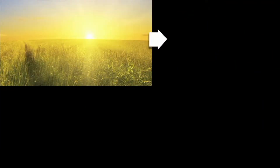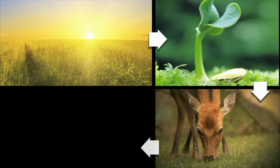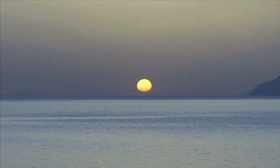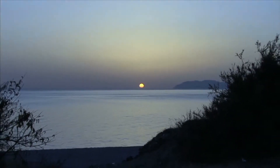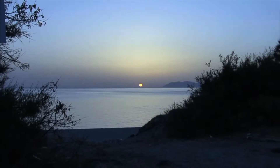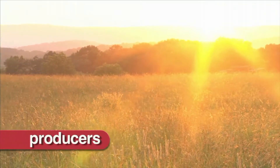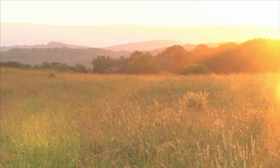To better understand how living things get energy, we use a food chain. A food chain shows the relationship between the plants and animals in an ecosystem. All food begins with the sun. The sun provides energy for everything on our planet. Plants are producers, and producers are at the beginning of a simple food chain. Plants get energy from the sun.